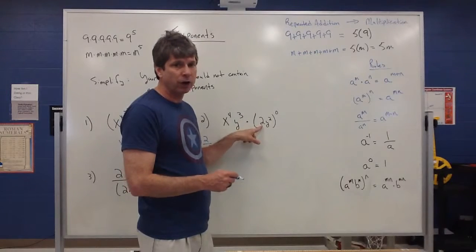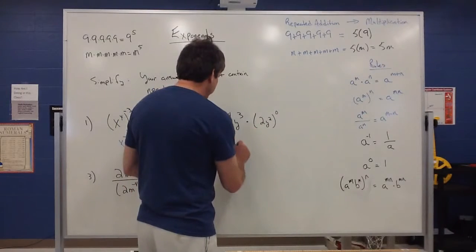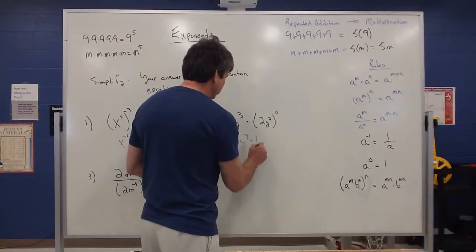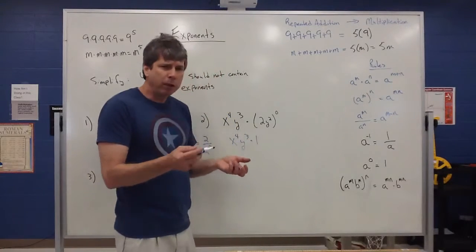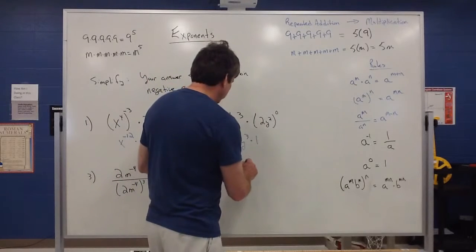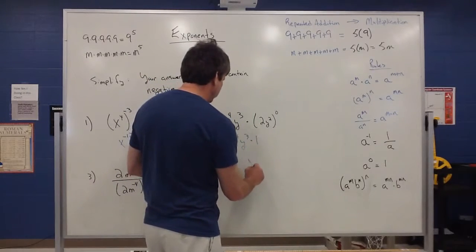Since this whole thing is in parentheses that zero has power over all of it. So that means all of it is going to turn into a one. So I have x to the fourth y to the third times one but again multiplied by one really doesn't do anything so I can just throw it out of the problem it absorbs. When you multiply by one it's just the identity it can be just dropped out.